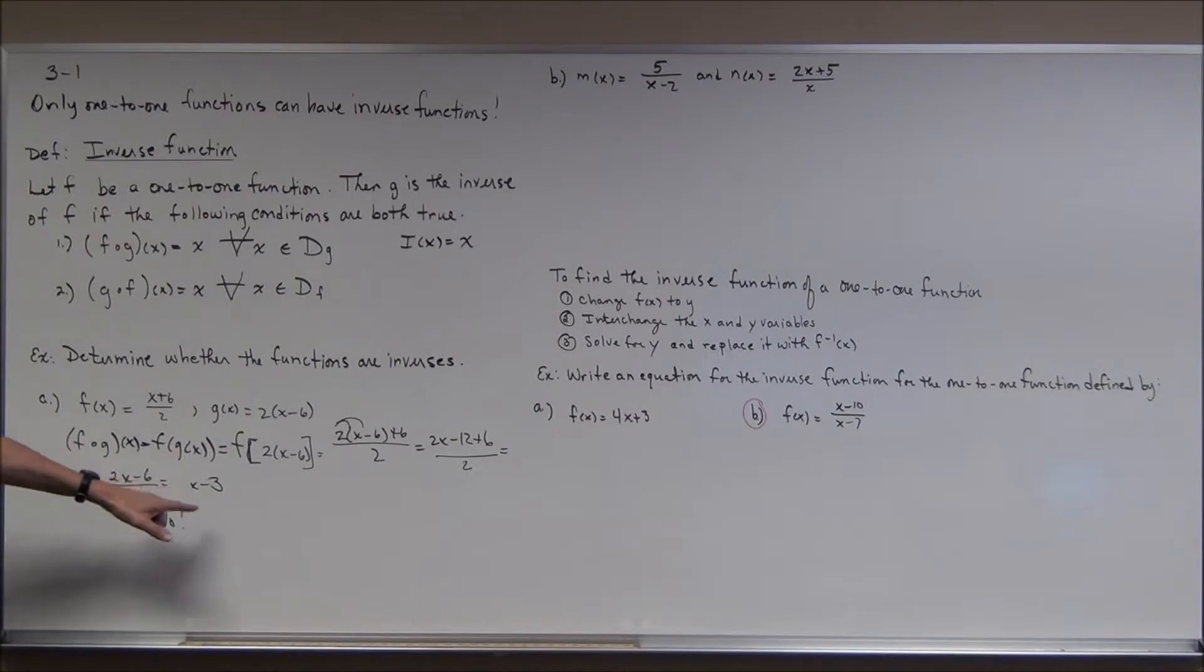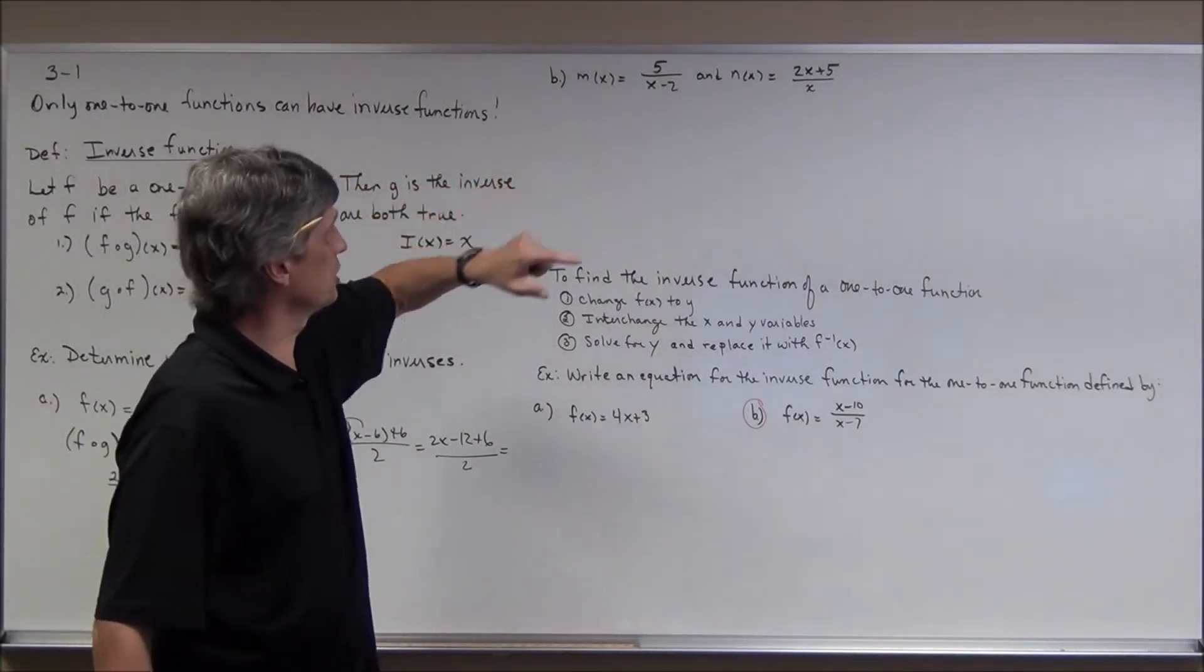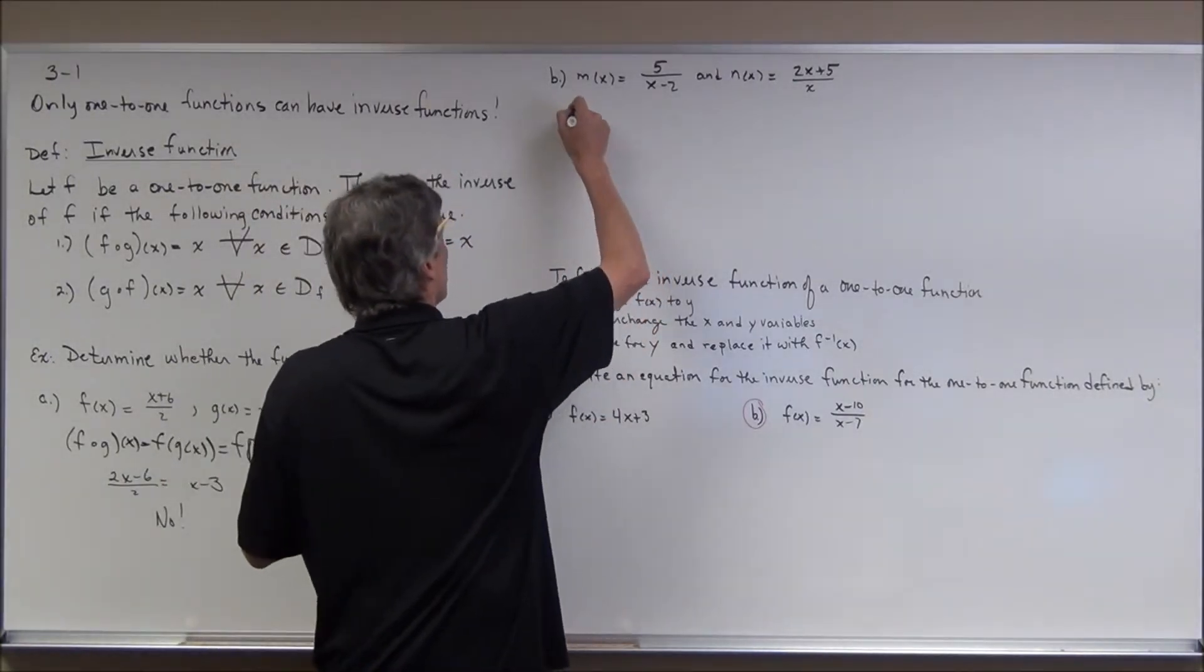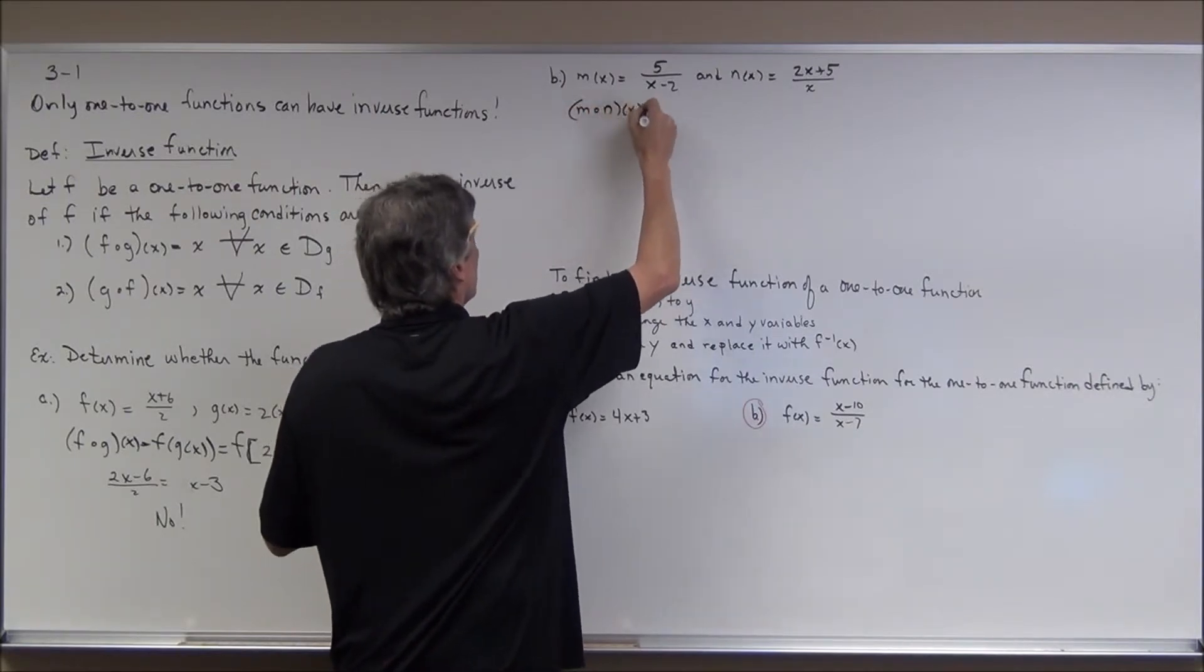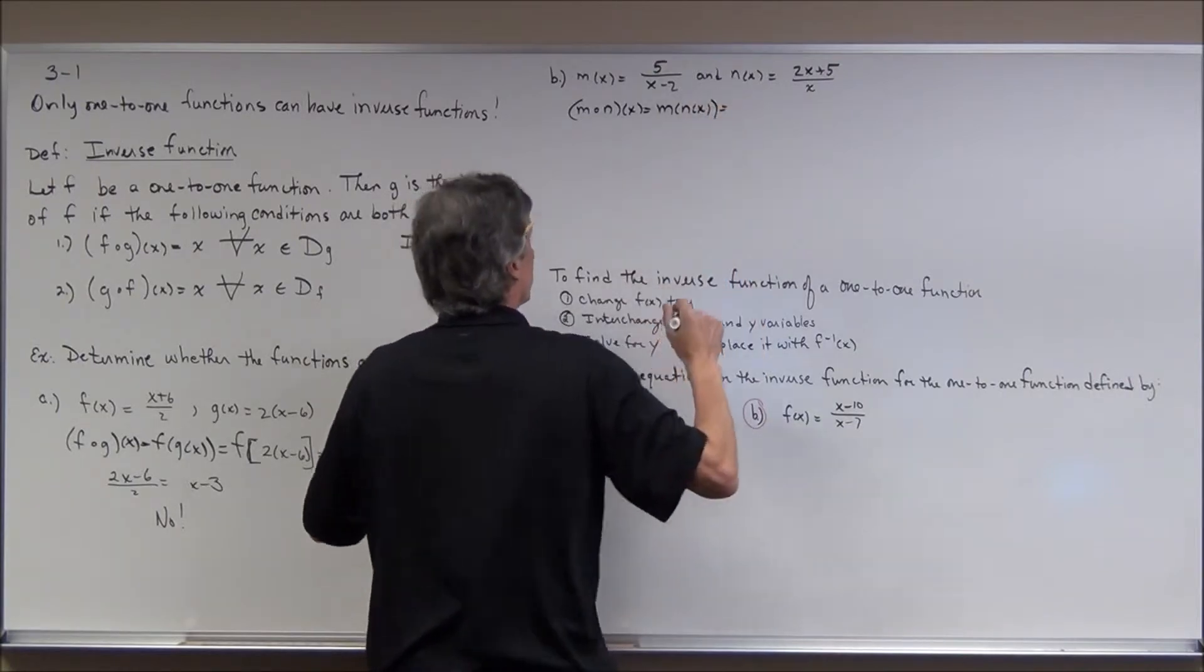Okay. Now look over here. I have a couple of rational functions here. I'm going to do the same directions. So first I'm going to take m circle n of x, which is m of n of x, and see if I get the identity.